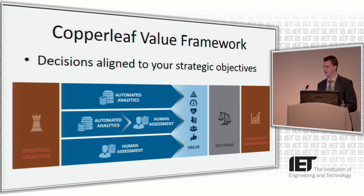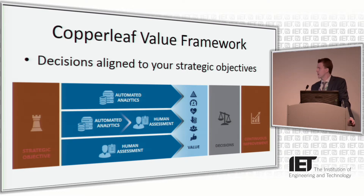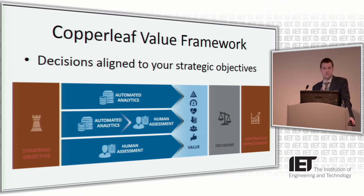One of the discussion topics proposed was around the data and data analytics required to support this process. What we see is often a combination of automated analytics that can take information on your assets and combine it to determine risk models and understand the consequence of different failures, but often there's also a large amount of human assessment required. It's not typically big data that's required, but just some of the core asset-related data you typically have within your organisations today, all flowing to get the link between strategic objectives, the understanding of value, and enabling you to make appropriate decisions.